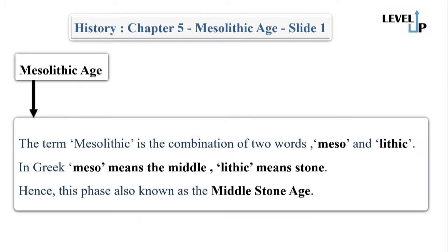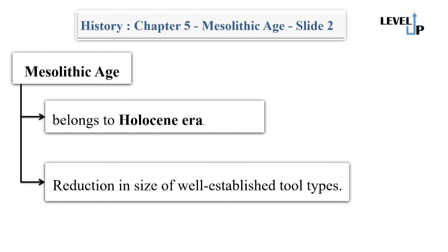Today we are going to learn about the Mesolithic Age. The term Mesolithic is a combination of two Greek words: 'meso' meaning middle and 'lithic' meaning stone — hence this phase is also known as the Middle Stone Age. The Mesolithic Age represents an intermediate stage in stone age culture. Both Mesolithic and Neolithic cultures belong to the Holocene era, which succeeded the Pleistocene era around 10,000 years ago.